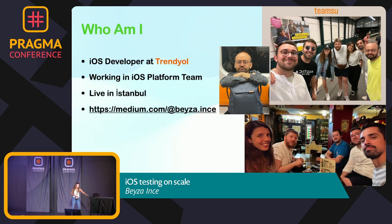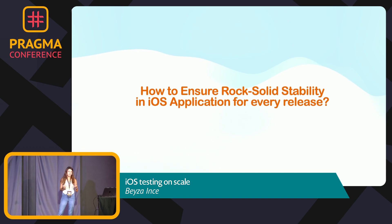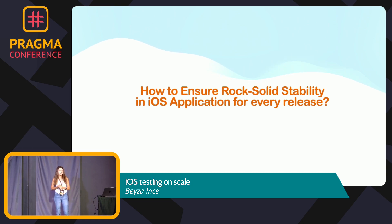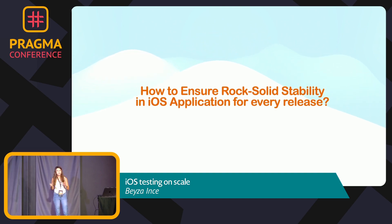Before the presentation, I would like to ask a question: how can we ensure that all the features in your application are working correctly before releasing it? Listing all the features and testing them one by one may seem like a reasonable approach. However, as your team expands and adds new features to each screen, manual testing can become chaotic easily.